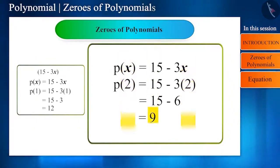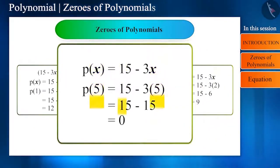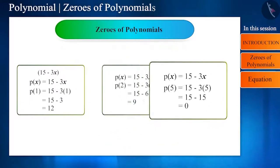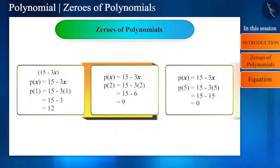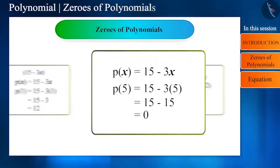Similarly, on dropping 2 rupees, he got 9 rupees and on dropping 5 rupees, he got 0. The polynomial will give different values for each number. My dear friends, there will be a number that will make the value of the whole polynomial 0.